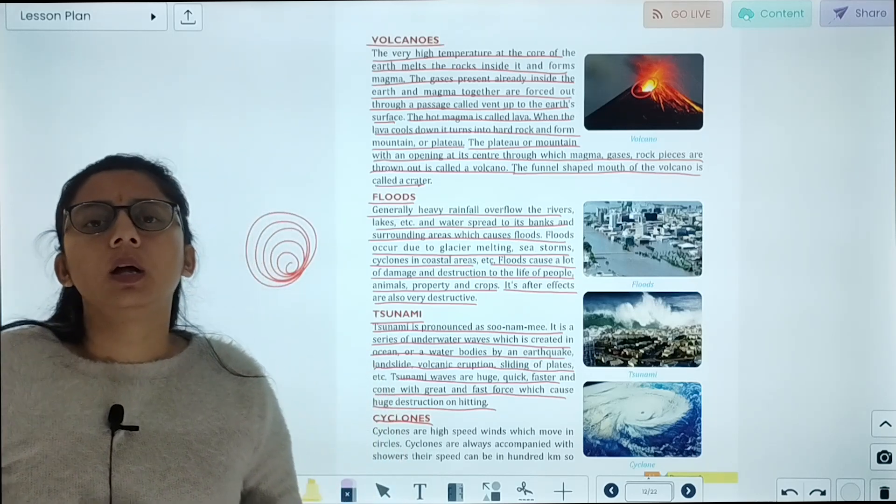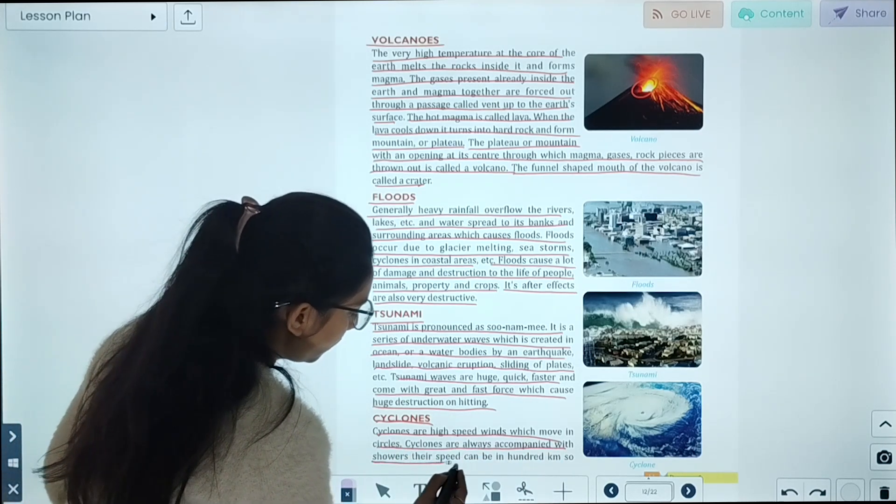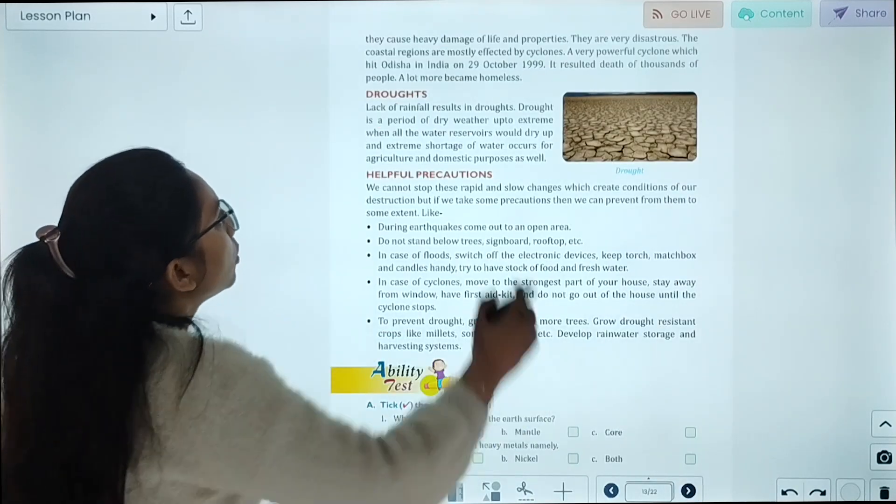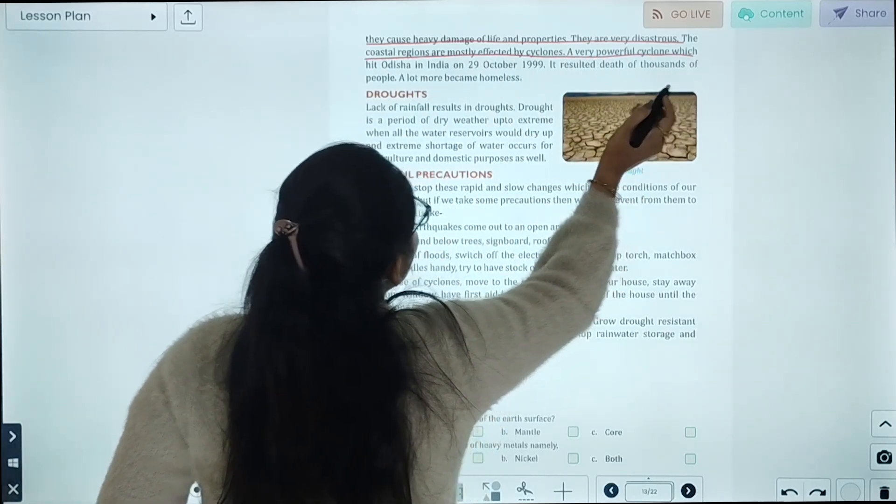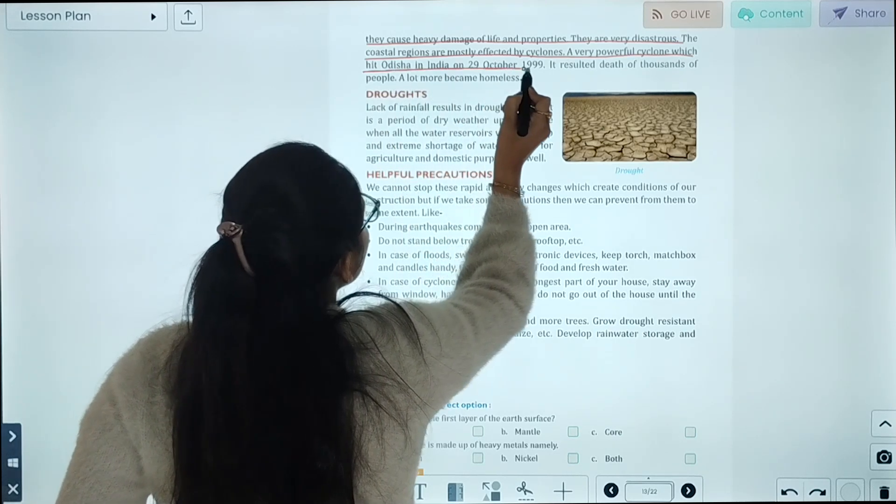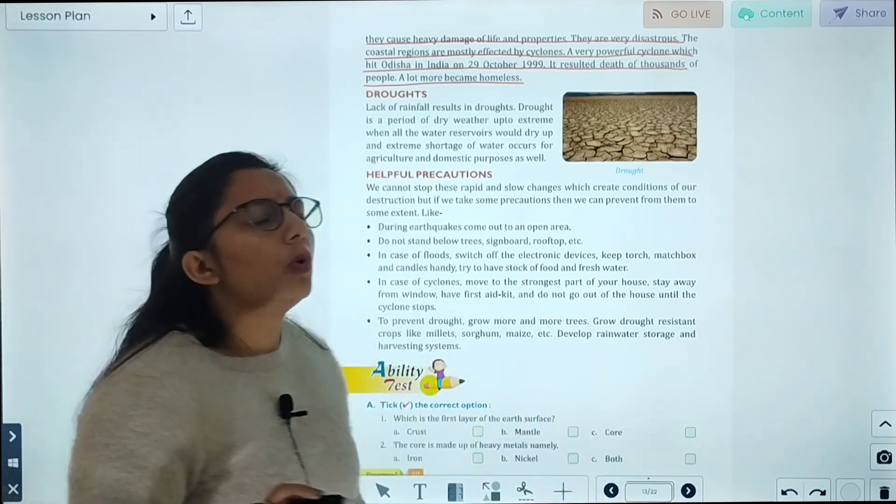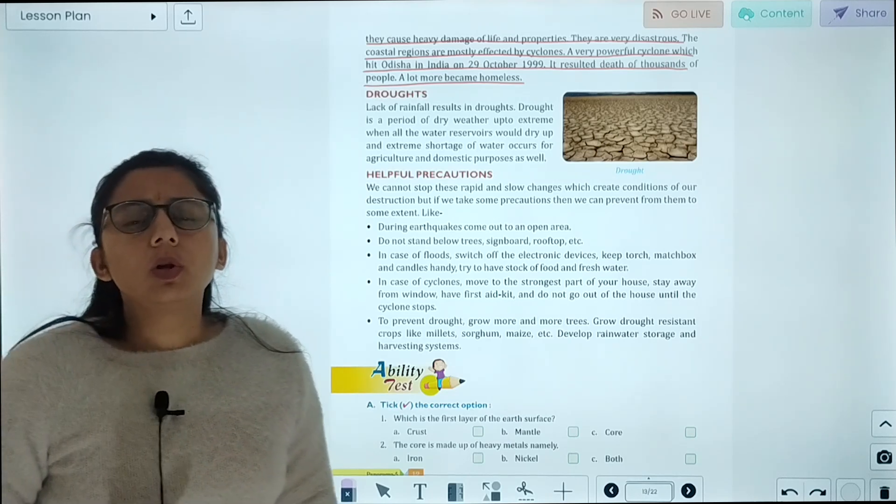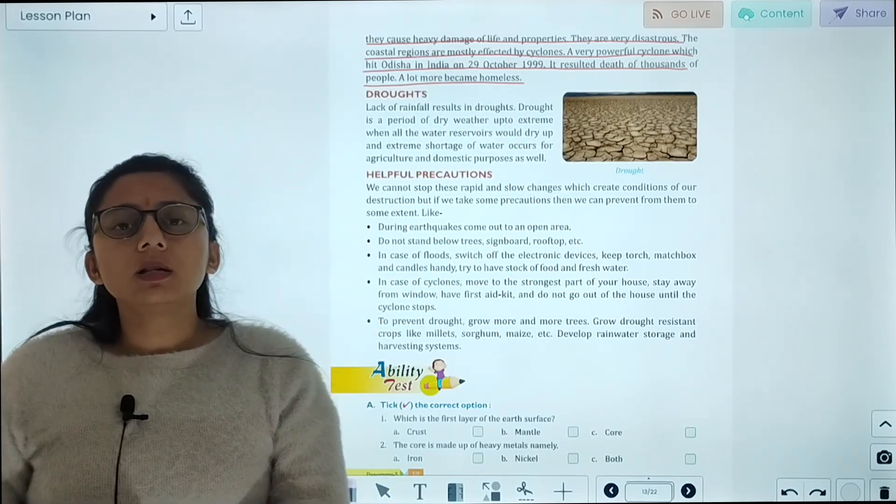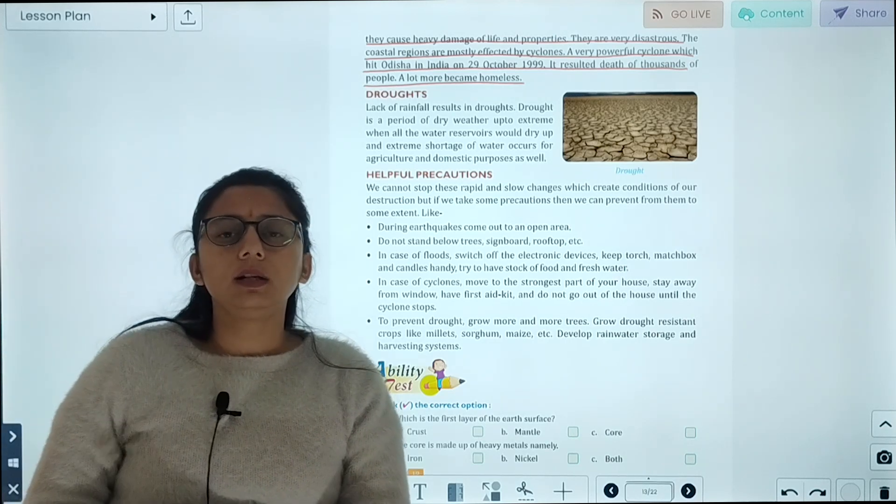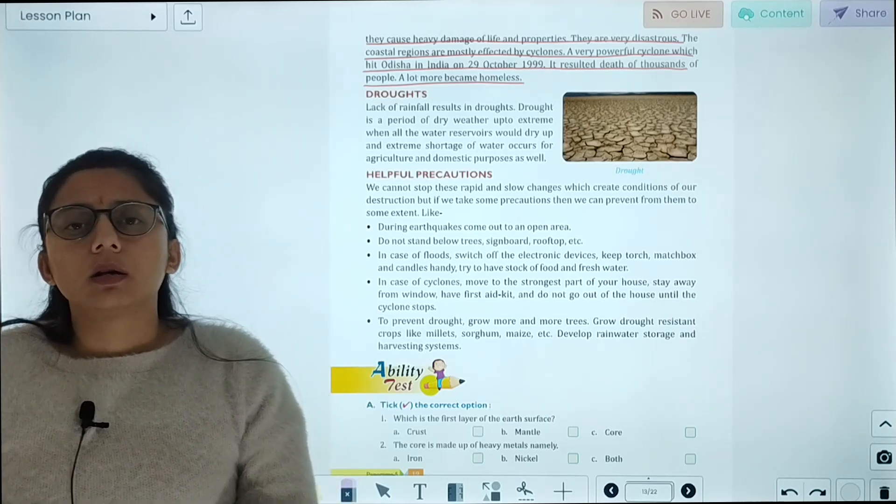Cyclones are high-speed winds which move in circles. Cyclones are always accompanied with showers. Their speed exceeds hundreds of kilometers per hour. They cause heavy damage to life and property. Coastal regions are mostly affected by cyclones. A very powerful cyclone hit Odisha in India on 29 October 1999. It resulted in the death of thousands of people, and many more became homeless.